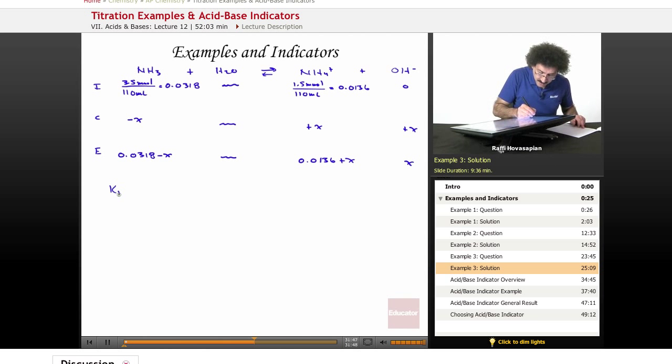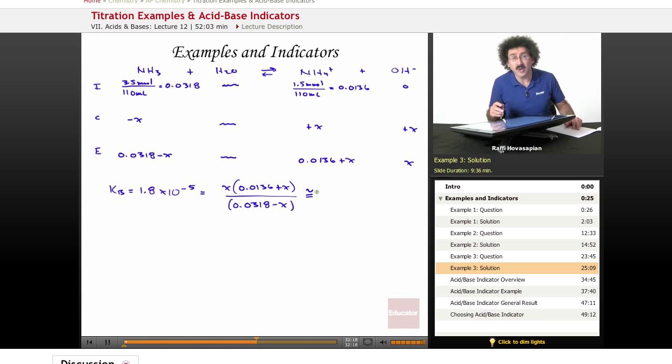And now, Kb, which equals, in the case of ammonia, 1.8 times 10 to the negative 5, is equal to this times this divided by that. It equals X times 0.0136 plus X divided by 0.0318 minus X. I hope that you guys are getting sick of seeing this over and over again. That's a good sign. Like I said last time, when you're sick of seeing a problem over and over again, that means you completely understand it. That's where you want to be. You want to be sick of these problems.